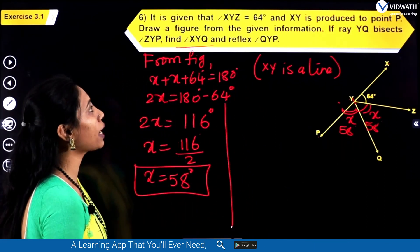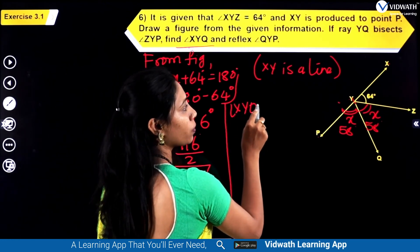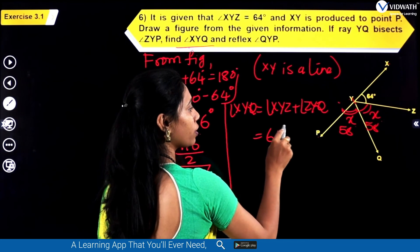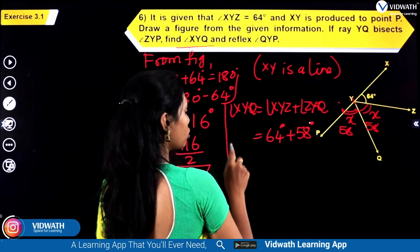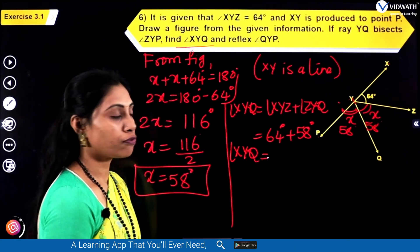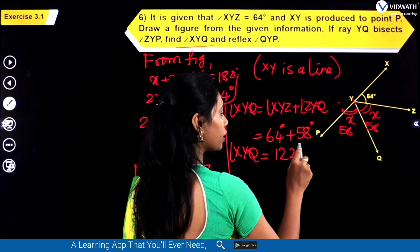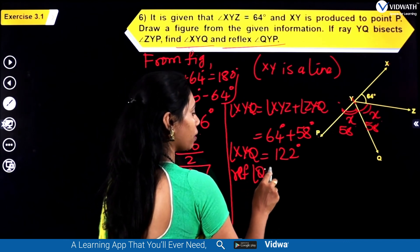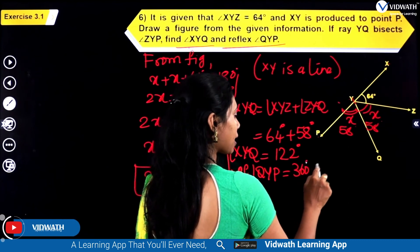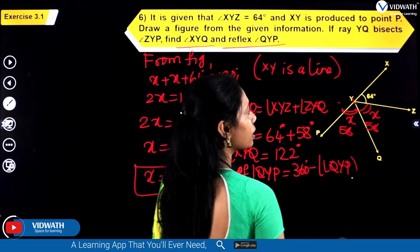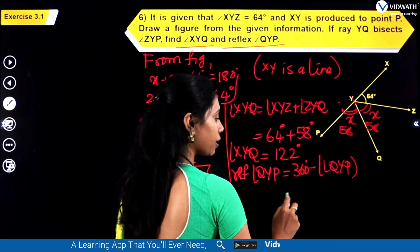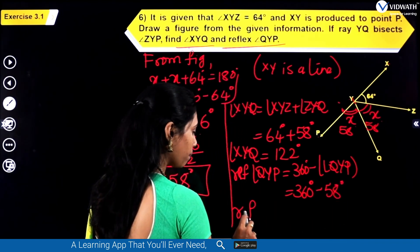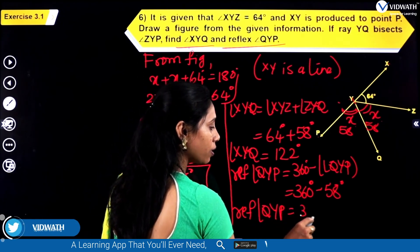Each bisected angle is 58 degrees. Angle XYQ equals angle XYZ plus angle ZYQ, which is 64 degrees plus 58 degrees, giving 122 degrees. Now for reflex angle QYP: angle QYP is 58 degrees, so reflex angle QYP is 360 degrees minus 58 degrees, which gives 302 degrees.